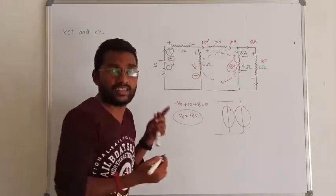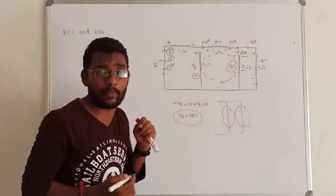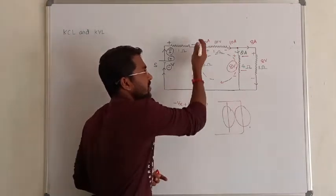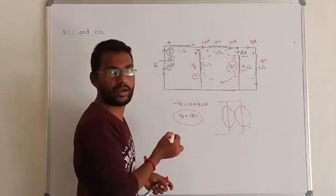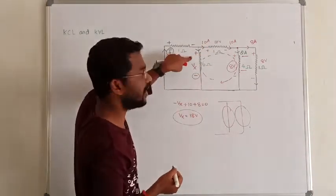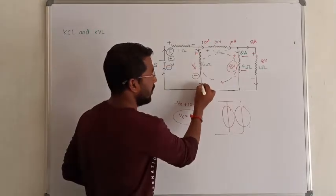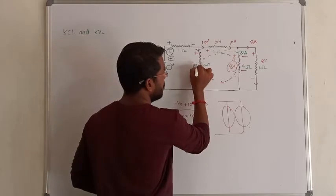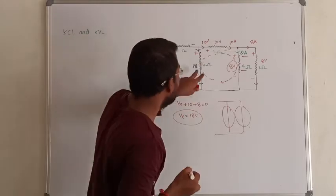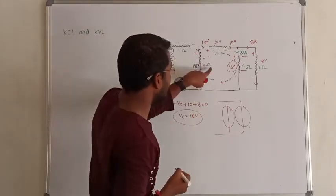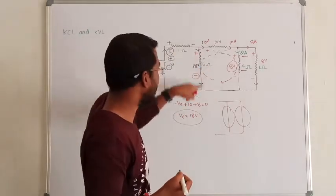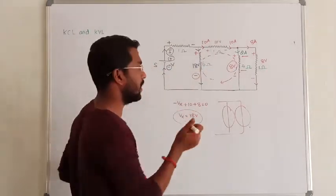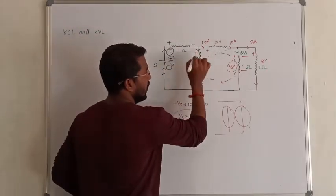If the resistance voltage drop equals Vx equals 18 volts, and the resistance is 6 ohms, then current equals 18 divided by 6, which is 3A. So the current through that branch is 3A.